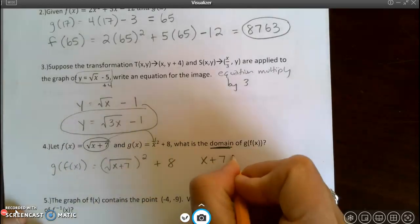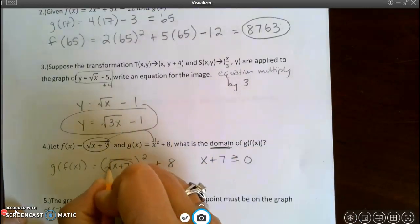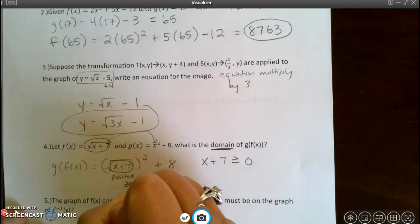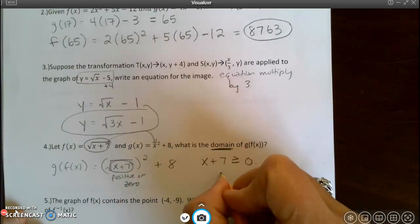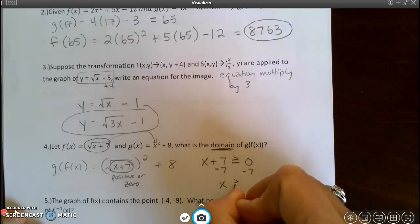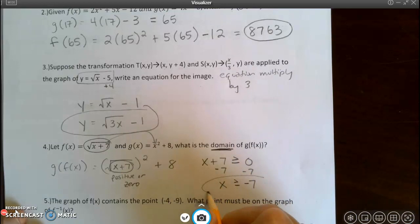Therefore, x plus 7 must be greater than or equal to 0, because this right here has to be positive or 0. So when I solve, I subtract 7 from both sides. x must be greater than or equal to negative 7. That is my domain.